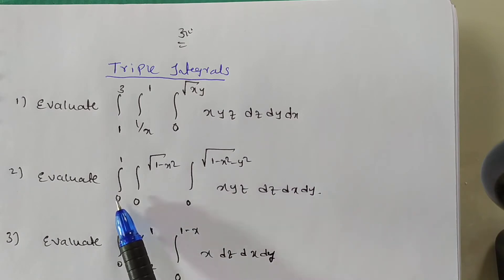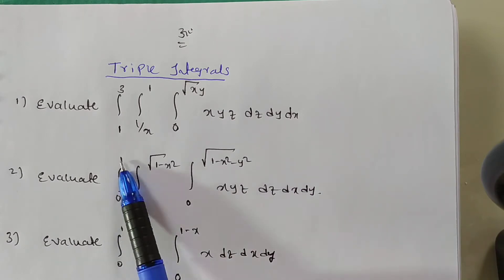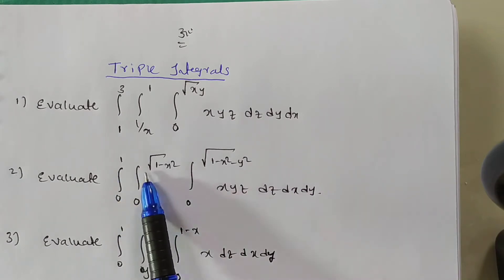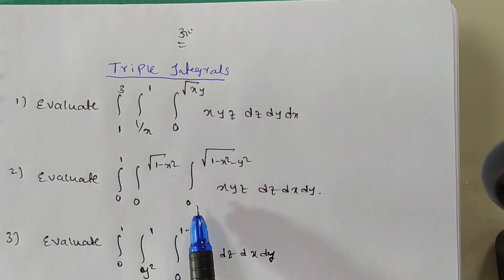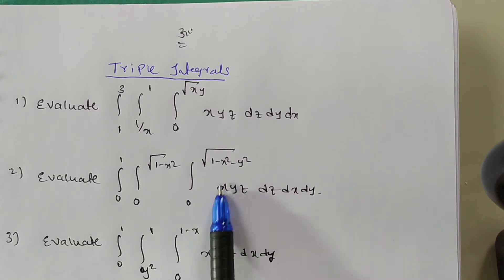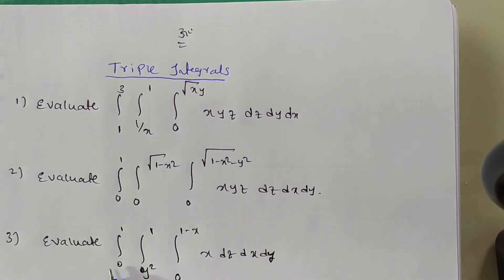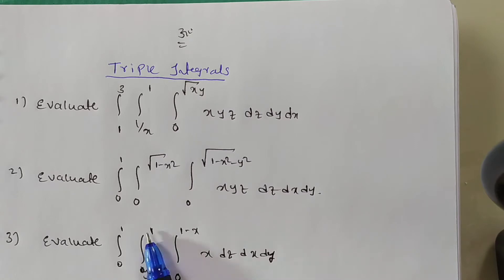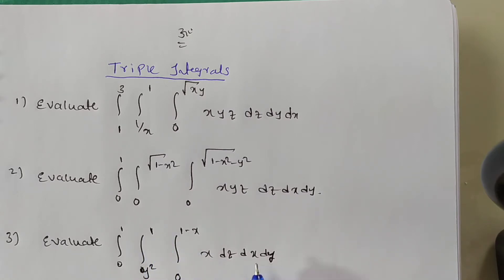The second problem: limits 0 to 1, 0 to root of 1 minus x squared, and 0 to root of 1 minus x squared minus y squared, integrand is x, y, z. The third problem: 0 to 1, y squared to 1, 0 to 1 minus x, integrand is x, dz dx dy.